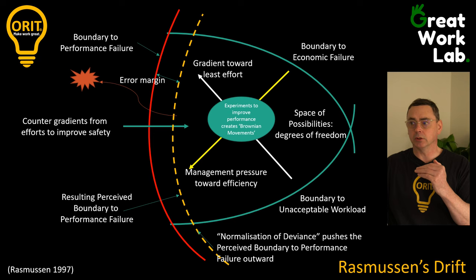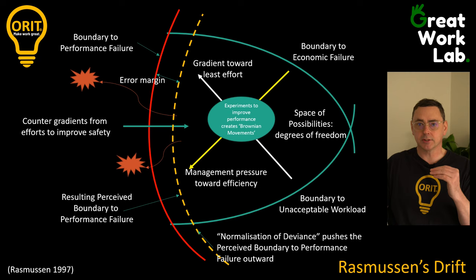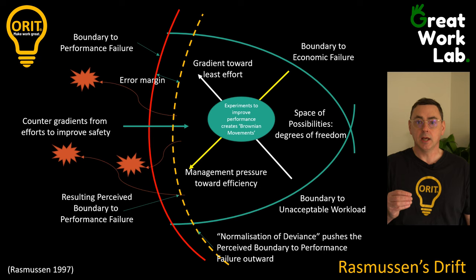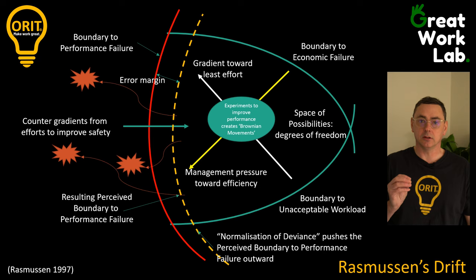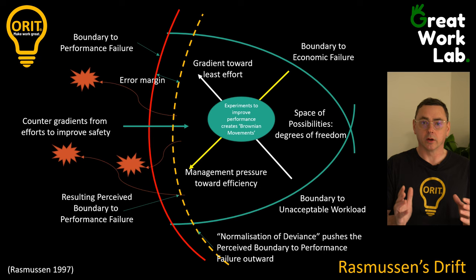Over time another accident occurs, we try to push back again and put some safety measures in place, then another accident. It's really important to understand how these things occur over time — how normalization of deviance works, those boundaries of safe performance, and why we need to spend a lot of time understanding and studying normal work.